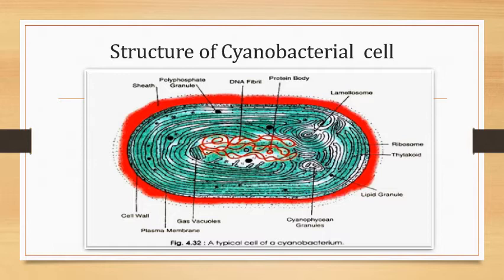Polyphosphate bodies are also present. These are spherical structures formed as a result of aggregation of higher molecular weight linear polyphosphates. They are also known as volutine granules. These structures develop mostly in cyanobacteria that grow in a phosphate-rich environment.